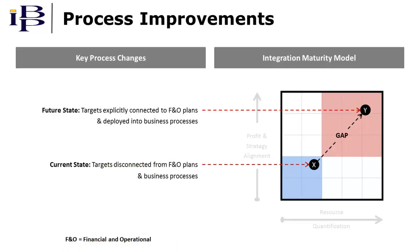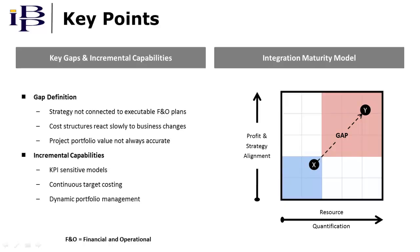More specifically, we'll focus on the capabilities that comprise the gap between current state processes that manufacturers typically employ, compared to more mature processes that explicitly connect business objectives to financial and operational plans. During the video, we'll highlight these capability gaps in more detail, as summarized on the left side of the screen. We'll also identify incremental capabilities that address these gaps, ones that enable more mature forms of process integration.